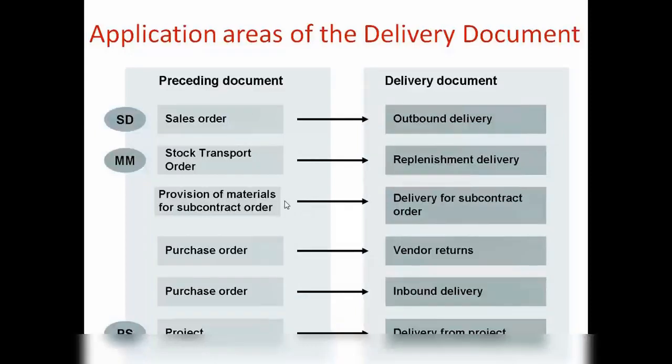Looking at the application areas of delivery documents: when we create a sales order we do outbound delivery, and when we create a purchase order we do inbound delivery. There are different types of delivery here — for example, there is even a delivery from projects, which is part of the SAP Project System module (PS). So we have not only one type of delivery which is outbound delivery; we have several and they work differently.